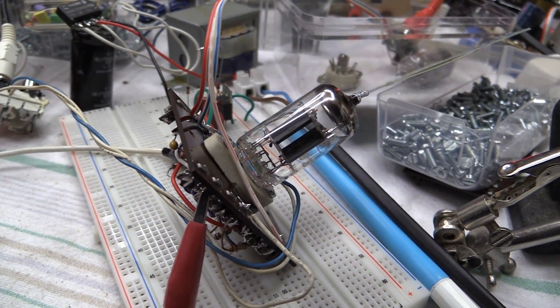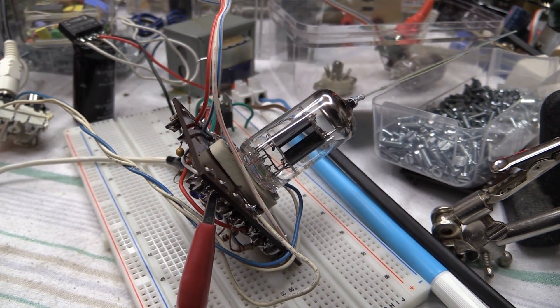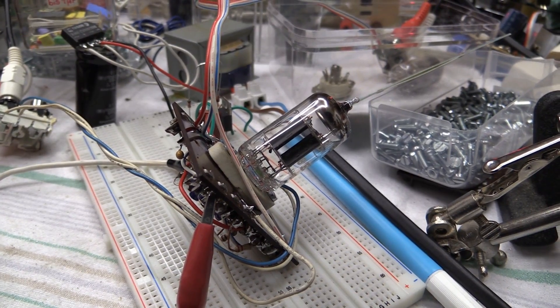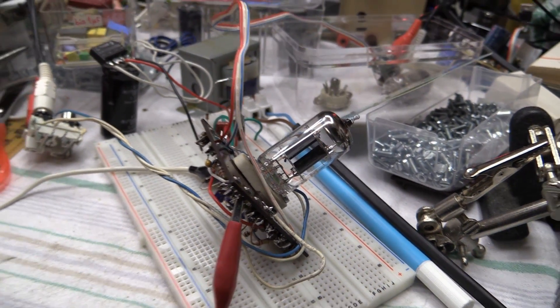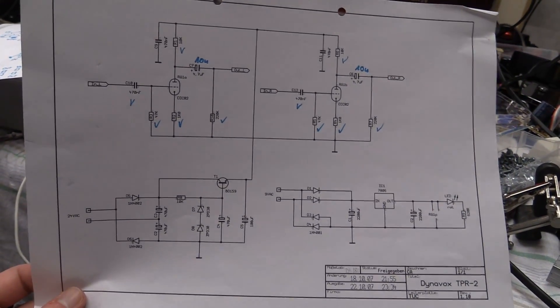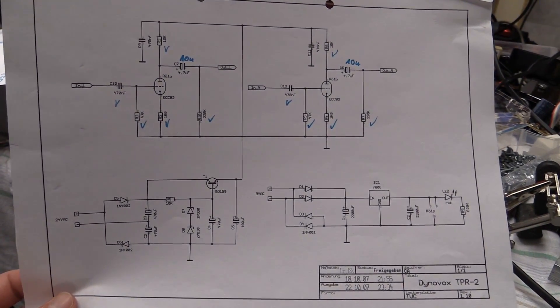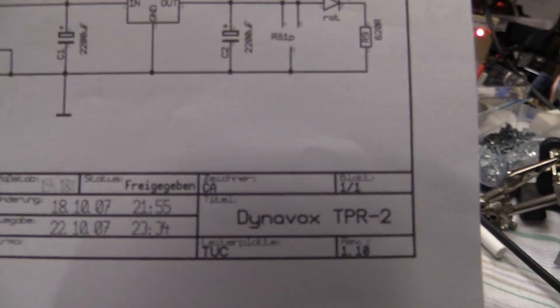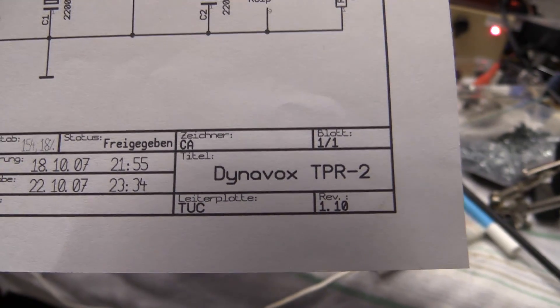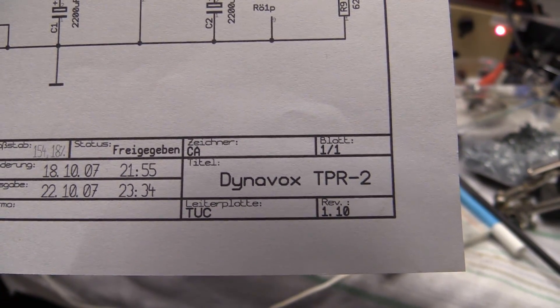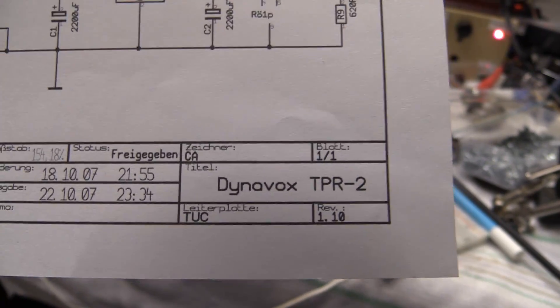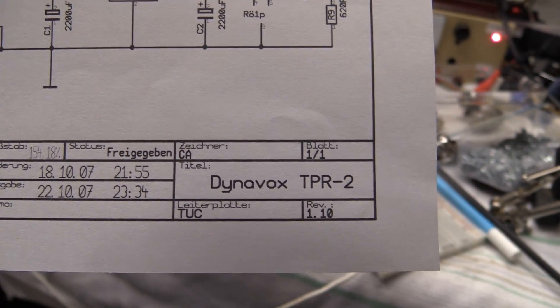This is an ECC82 or 12AU7 based pre-amplifier. It's really nothing spectacular. As you can see right here, I have the schematic. This came out of the internet and this is actually the schematic of the Dynavox TPR-2. It's a tube type pre-amplifier, or well, it's a pre-amplifier with one tube in it to give it some tube type sound.